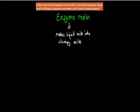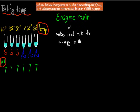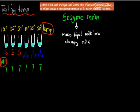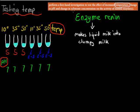What renin does is it's an enzyme which turns liquid milk — so normal milk — into clumpy milk. We can see if the enzyme is active by seeing if the milk turns clumpy. If it turns into clumpy milk, that means the enzyme is present and active. So we tested for temperature, pH, and substrate concentration.